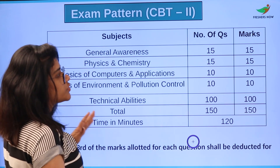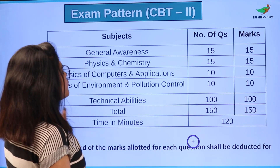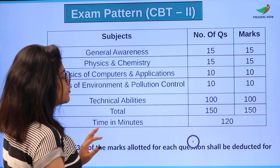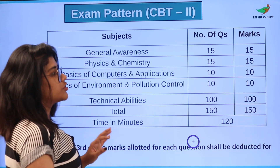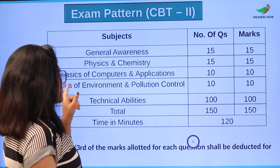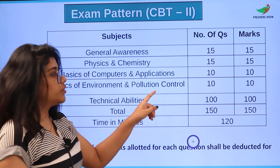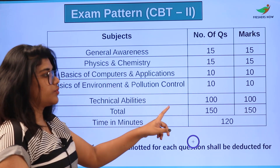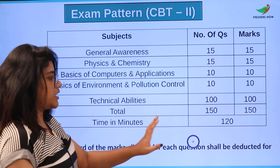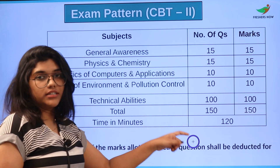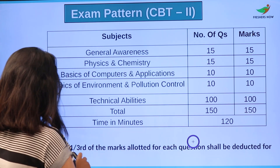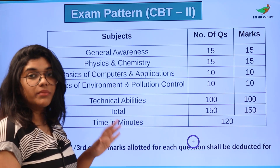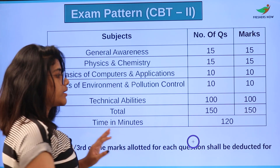For CBT Stage 2, the subjects are: General Awareness — 15 questions, 15 marks; Physics and Chemistry — 15 questions, 15 marks; Basics of Computers and Applications — 10 questions, 10 marks; Basics of Environment and Pollution Control — 10 questions, 10 marks; and Technical Abilities — 100 questions, 100 marks. The time limit is 120 minutes. Again, one-third of your marks will be deducted for any wrong answer in Stage 2 as well.